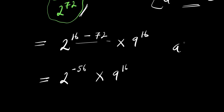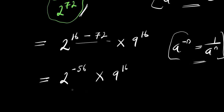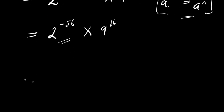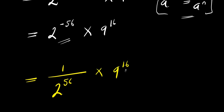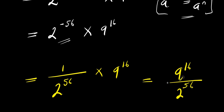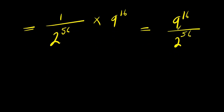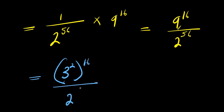Using the identity A^(−N) = 1/A^N, we rewrite 2^(−56) × 9^16 as 9^16 / 2^56. Since 9 is a perfect square, 9 = 3^2, giving us (3^2)^16 / 2^56.